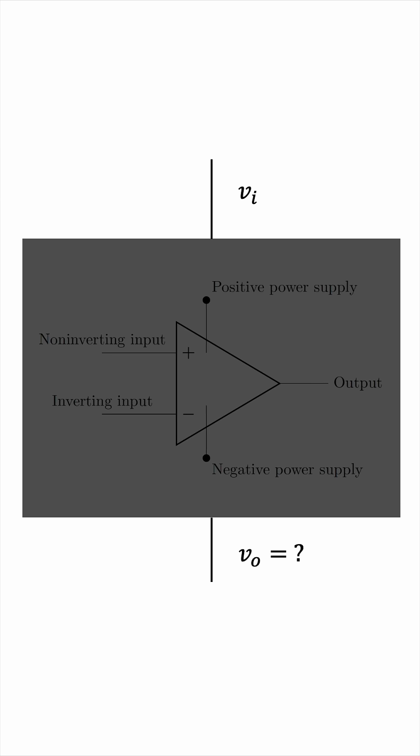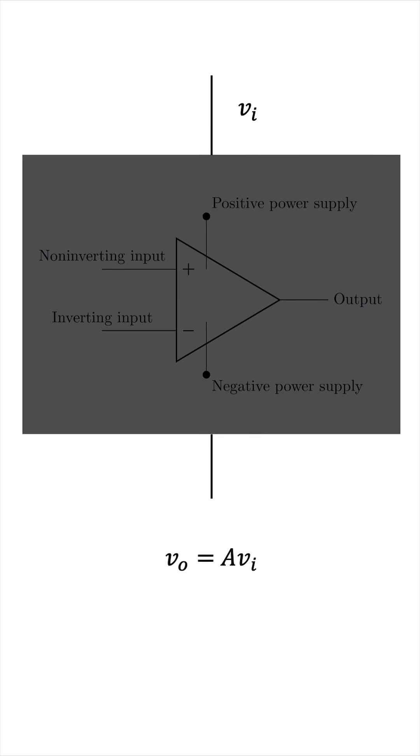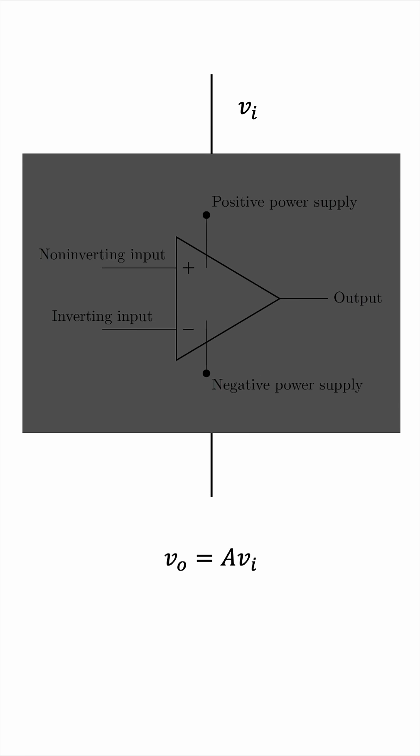In general, the output voltage is a multiple of the input voltage, and this factor A is the gain of the amplifier. The gain depends on the circuit in which the OPAMP is embedded.